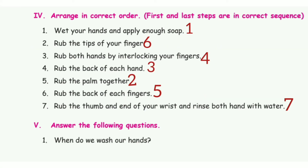Arrange in correct order — hand washing steps. First: wet your hands and apply enough soap. Second: rub the palm together. Third: rub the back of each hand. Fourth: rub both hands by interlocking your fingers. Fifth: rub the back of each finger. Sixth: rub the tips of your fingers. Seventh: rub the thumb and end of your wrist, then rinse both hands with water.